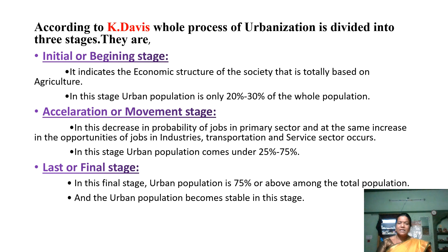In the initial or beginning stage, it indicates an economic structure of the society that is totally based on agriculture. In this stage, urban population is only 20% to 30% of the whole population.